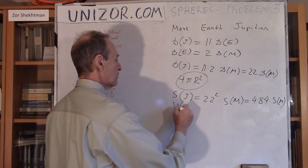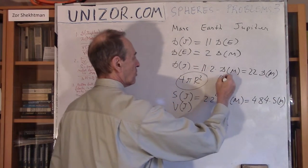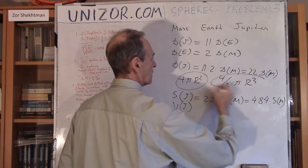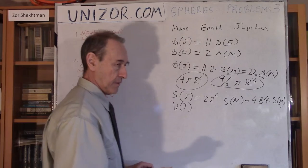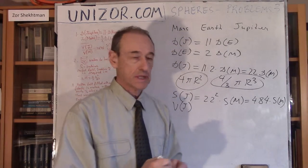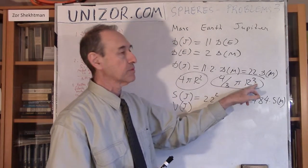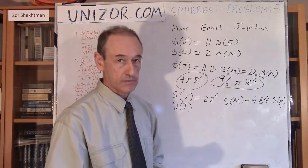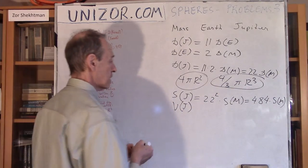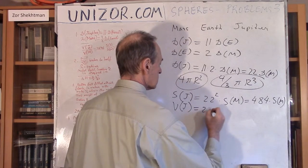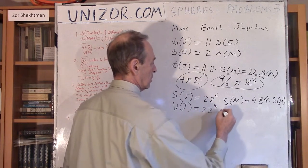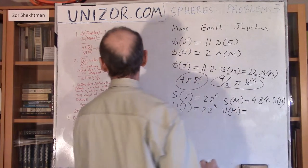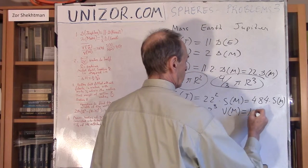Now, the volume of Jupiter: the formula is four-thirds pi r-cubed. What's important is that the volume is proportional to the third degree of the radius, or the third degree of the diameter. So the volume of Jupiter is twenty-two cubed times the volume of Mars, which is 10,648.